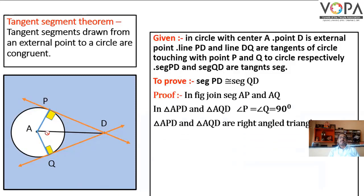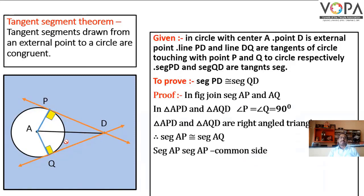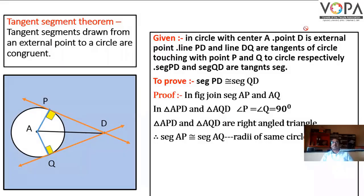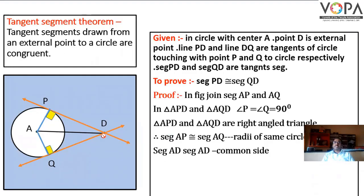In triangle APD and triangle AQD, segment AP is congruent to segment AQ as radii of the same circle. And segment AD is congruent to segment AD as it is the common side.